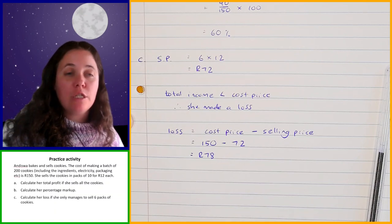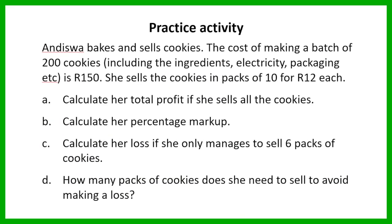Now we're going to go into the last question, which is question D. How many packs of cookies does she need to sell to avoid making a loss — in other words, to break even? If you break even it means that you don't make a loss; you're just recovering your costs. So we need to work out how many packs she needs to sell to recover the 150 Rand cost. I'm going to give you one minute to work that out.